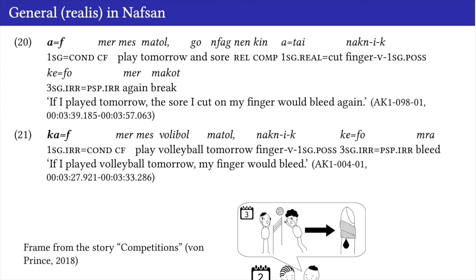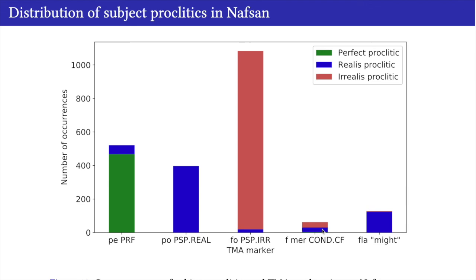In conditional clauses, we see this interchangeability clearly. From a storyboard with a specific context—two friends planned to play volleyball but one hurt his finger—he says 'if I play tomorrow, the cut on my finger will bleed again.' This is future and counterfactual. The same sentence was produced by two different speakers: one used the general proclitic in the protasis—'afmer mas matol'—while the other used the irrealis proclitic. Going back to the distribution plot, this counterfactual context shows roughly half occurrences with irrealis and half with the general proclitic.